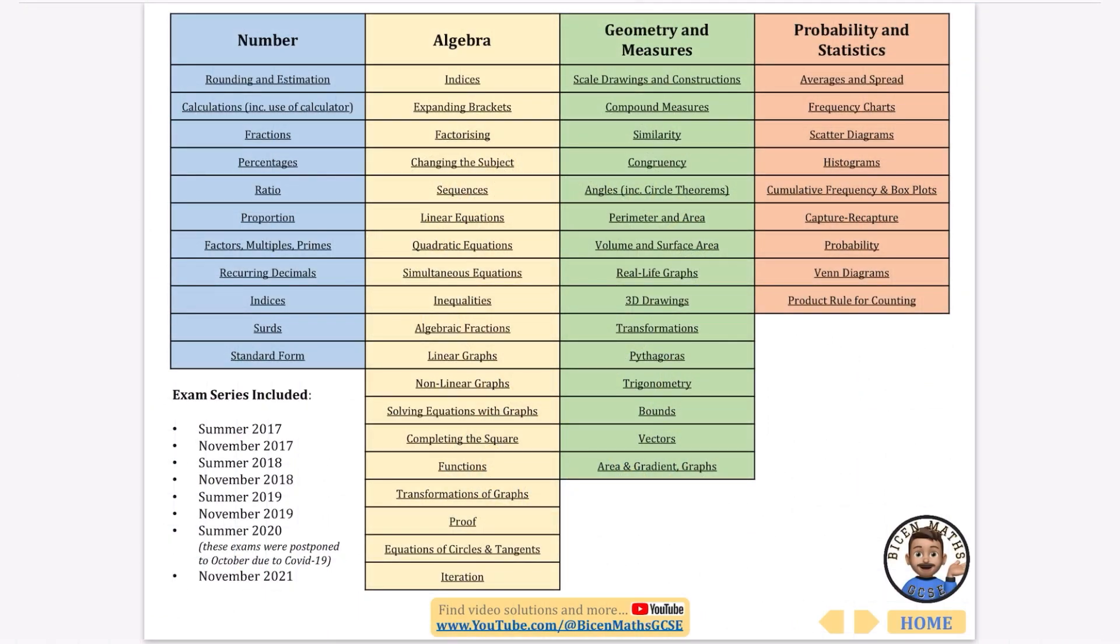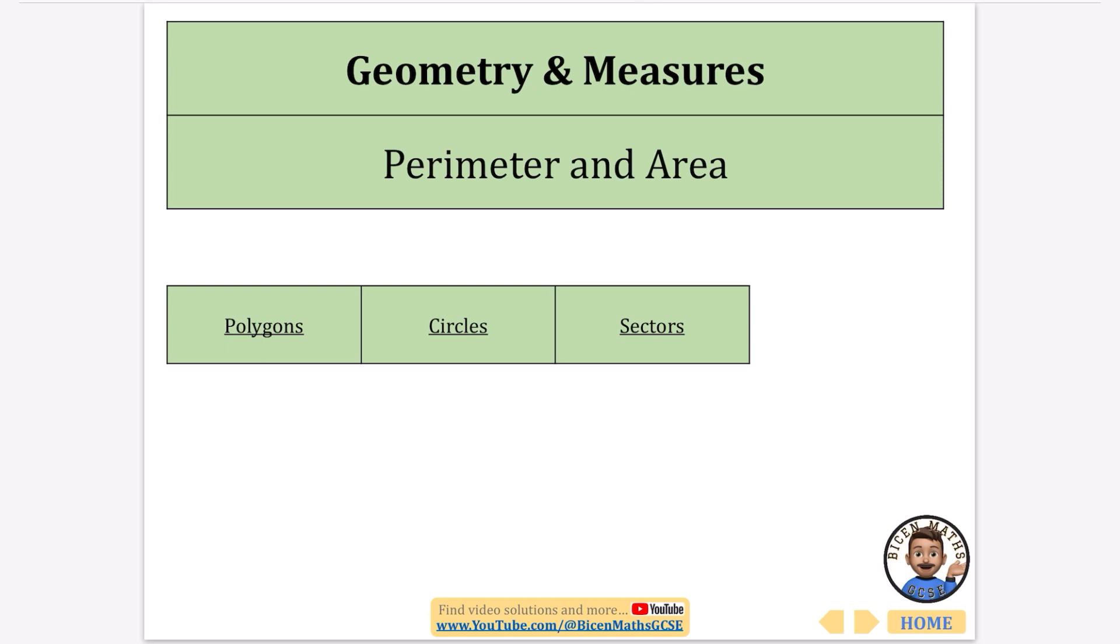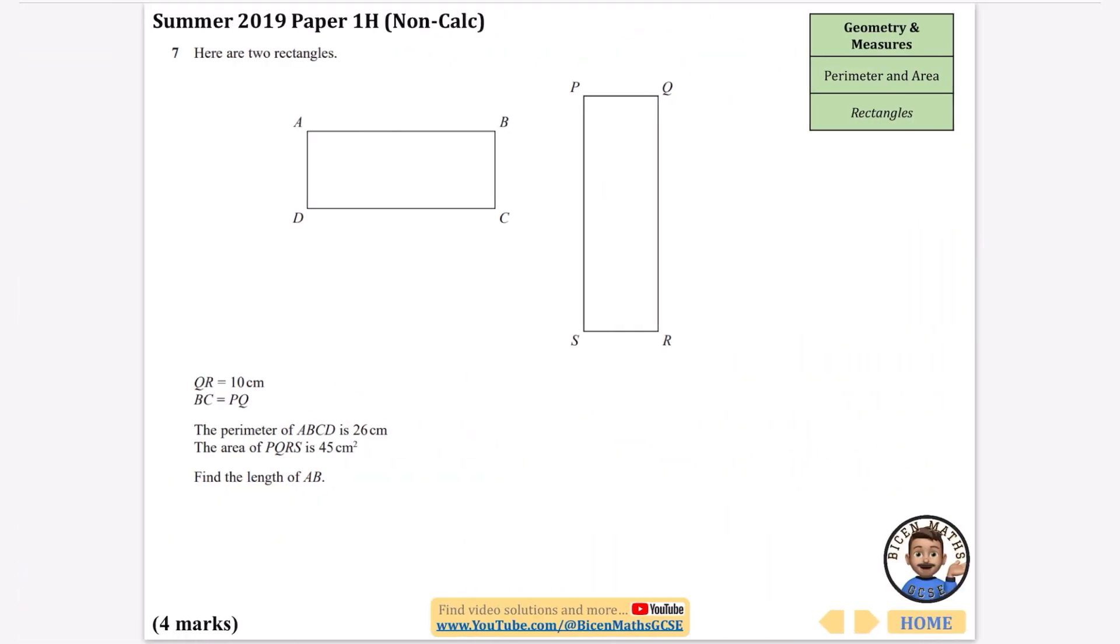In this video I'm going to be doing everything that has been asked about perimeter and area. I'm going to split this into two sections: polygons and then circles and sectors afterwards. For the polygon section I just mean anything with straight edges on the sides.